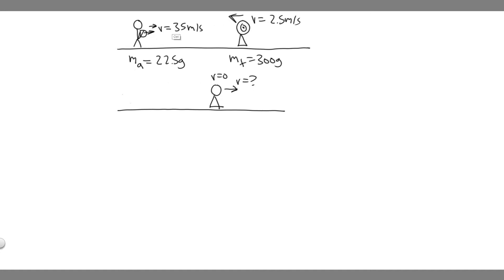We have this person, they're going to shoot an arrow. Then we have this target that's sliding towards them 2.5 meters per second and we're given the mass of the arrow and the target.